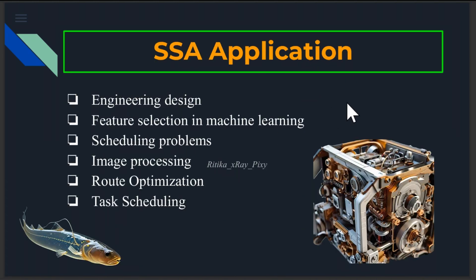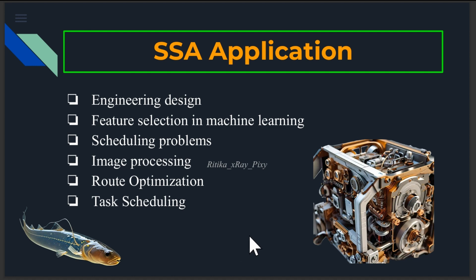There are different applications where we can use this algorithm. In engineering design for optimizing mechanical structures and electrical circuits. In image processing to improve feature selection and feature extraction. For task scheduling in computational grids, optimizing resource allocation. For route optimization in transportation to find the most efficient routes.